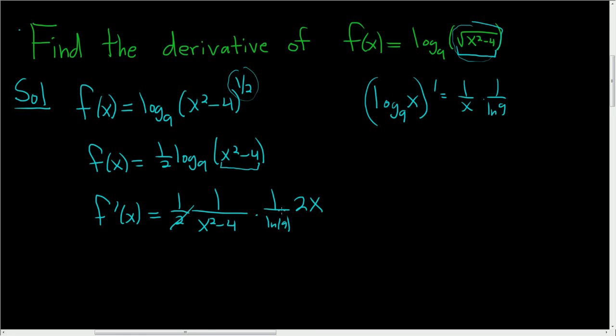And the 2s cancel, so we end up with x over natural log of 9, and then x squared minus 4. And that is the final answer. I hope that made sense. Thank you, guys.